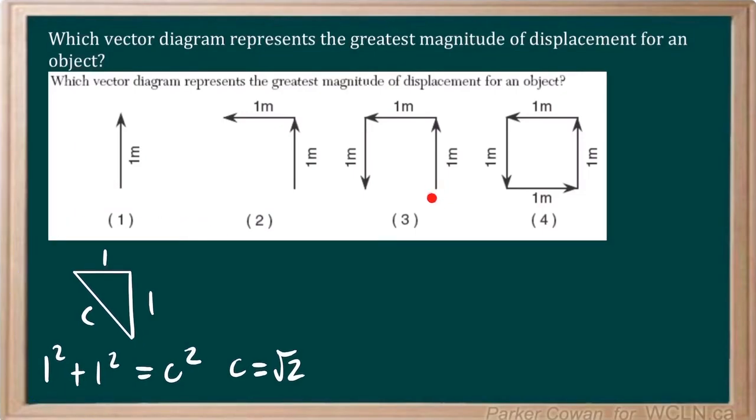Next, we have this kind of square here. And so from start to finish, it's just going to be a one-meter displacement as well. So I'll go ahead and write down what we've found so far, one meter. And then, of course, this one is one meter.